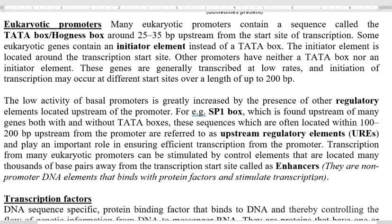The main role of regulatory elements is to increase the low activity of basal promoters. One example is the SP1 box, which is a regulatory element found upstream of many genes, both with and without TATA boxes. These sequences are often located within 100 to 200 base pairs upstream from the promoter, and this type of sequence is called upstream regulatory elements, shortly referred to as UREs.